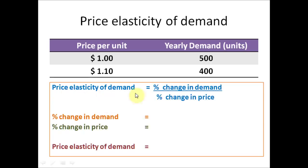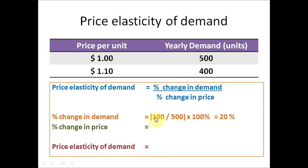We start from the formula: take the percentage change in demand and divide it by the percentage change in price. The first step is to calculate the percentage change in demand. When the price increased to $1.10, the yearly demand decreased to 400 units. So we take the 100 units — that is 500 minus 400 — and divide it by the original yearly demand of 500 units, to get a percentage change in demand of 20%.